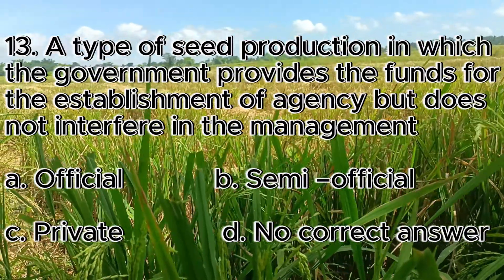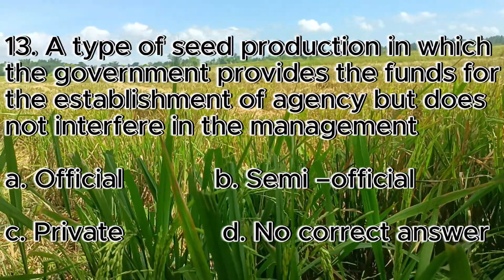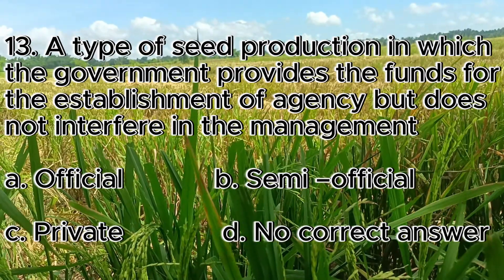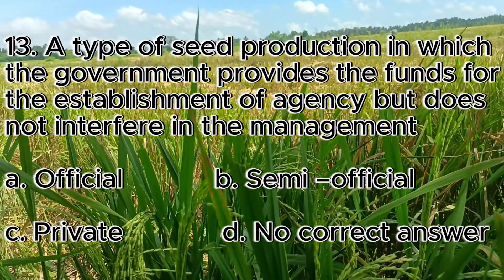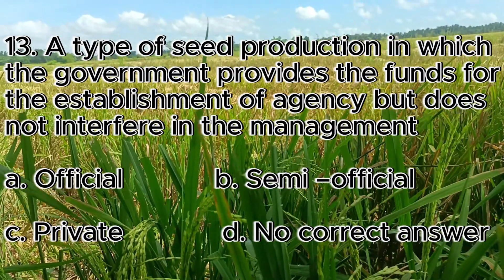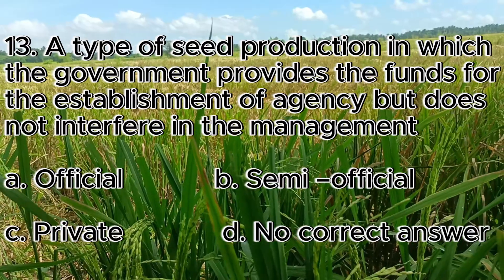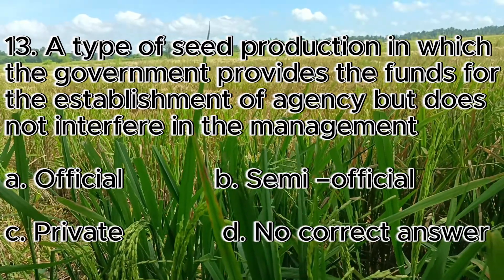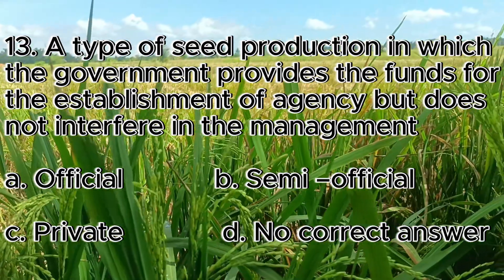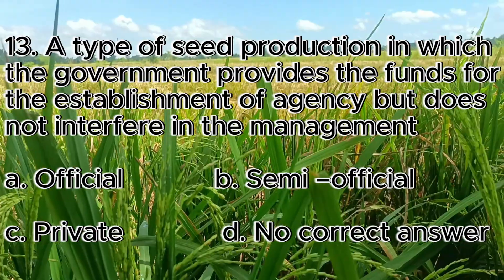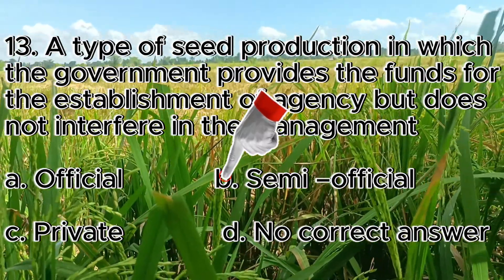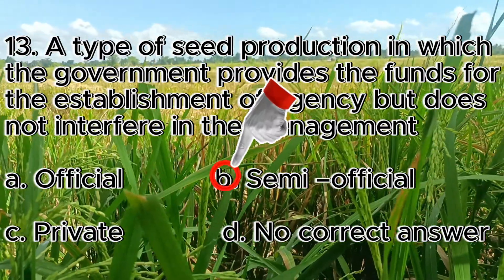Number 13. A type of seed production in which the government provides the funds for the establishment of the agency but does not interfere in the management. A. Official, B. Semi-official, C. Private, D. No correct answer. The answer is letter B, semi-official.